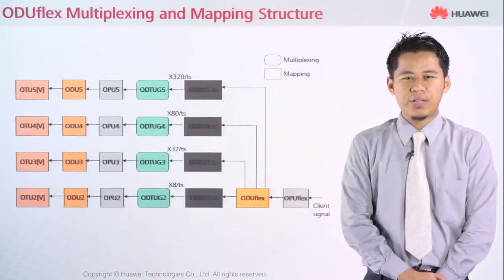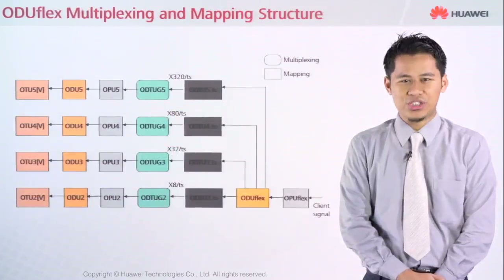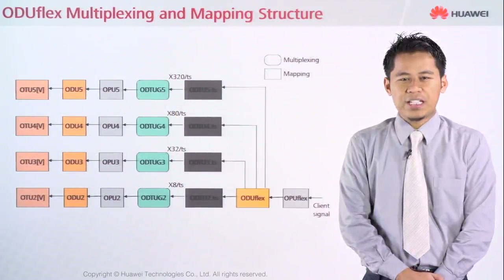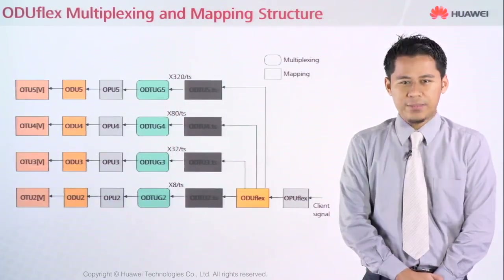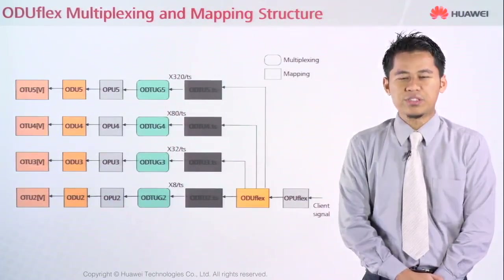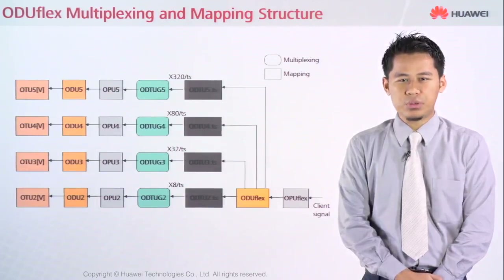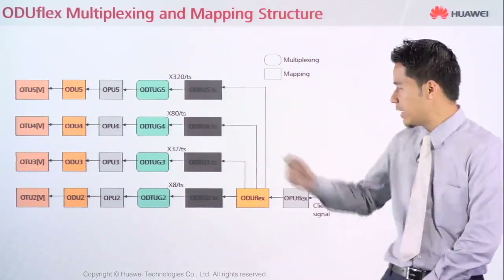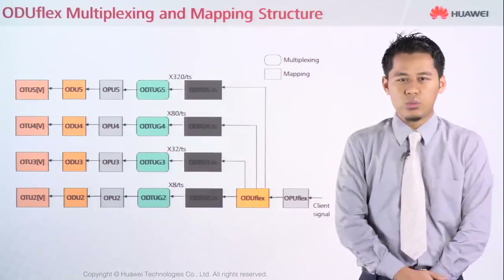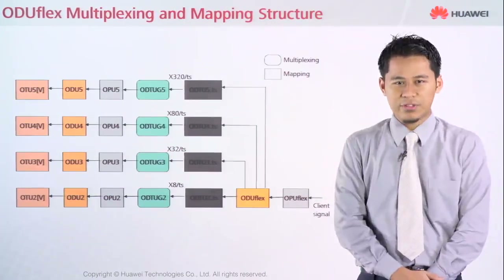ODU Flex multiplexing and mapping structure. ODU Flex stands for ODU flexible. It has 8 time slots, where each time slot is 1.25 Gbps. As you can see, they will multiply with the time slots.